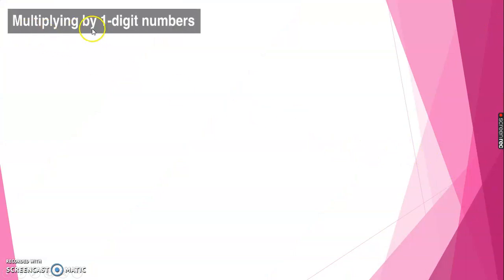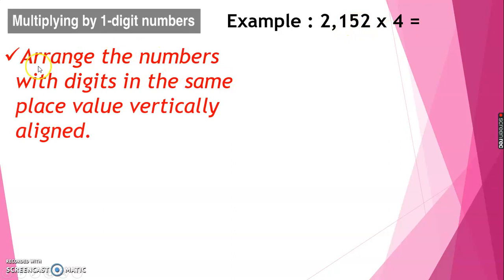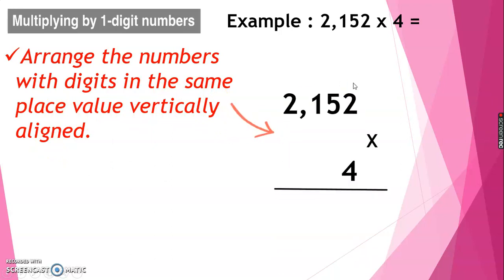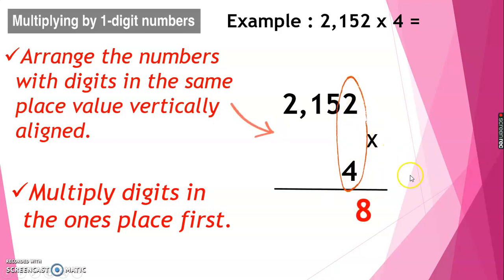Next, multiplying by 1-digit numbers. Example: 2,152 times 4. First, arrange the numbers with digits in the same place value vertically aligned, just like this. Second, multiply the digit in the ones place first. So the ones place digits are 2 and 4. 2 times 4 is equal to 8.